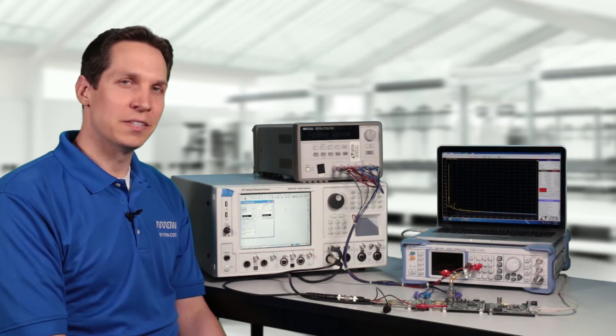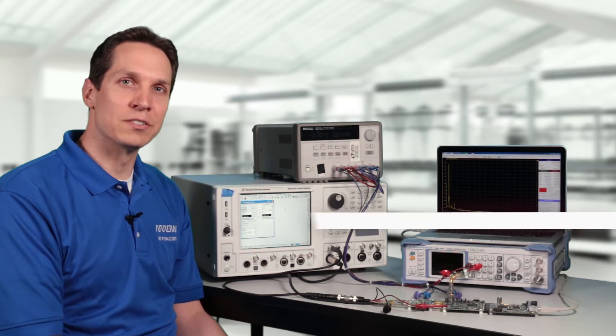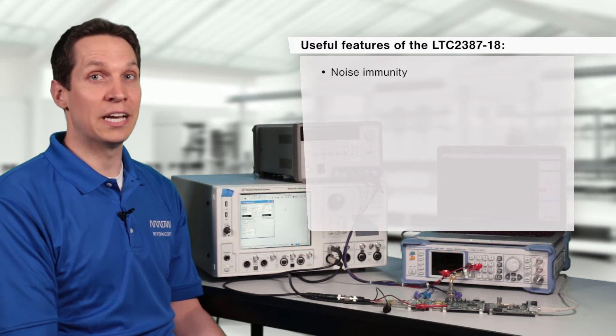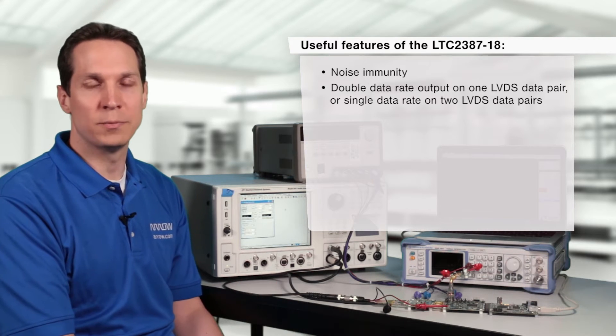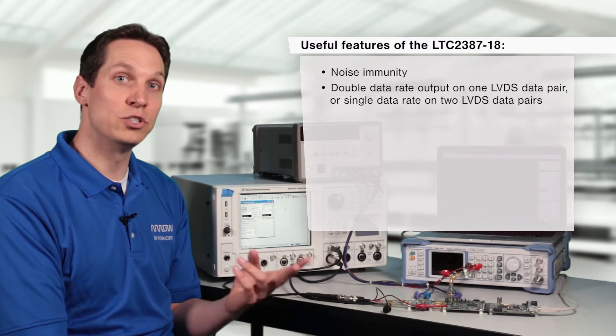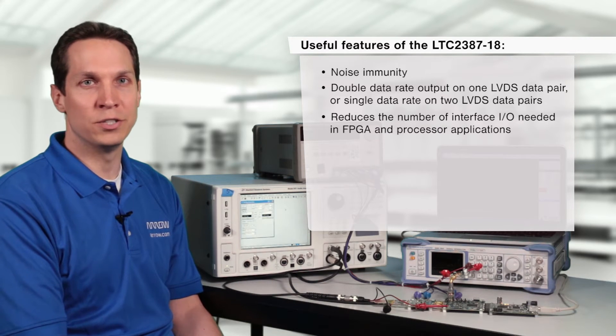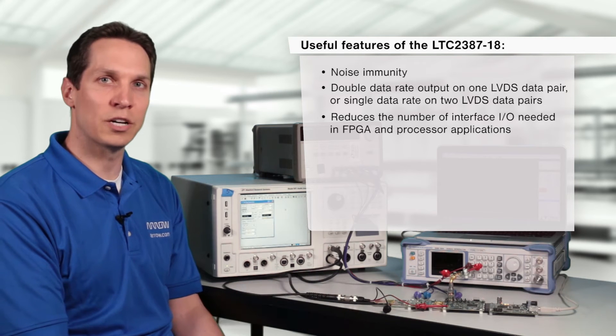The LTC-2387-18 has several useful features. The LVDS serial interface provides noise immunity and can output data at double data rate on one LVDS data pair or single data rate on two LVDS pairs. This is very helpful in reducing the number of interface I/O needed in FPGA and processor applications.